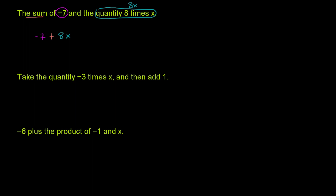Let's do the next one. Take the quantity negative 3 times x and then add 1. The quantity negative 3 times x, we can write that as negative 3x. And then we need to add 1 to that, so that's going to be negative 3x plus 1.